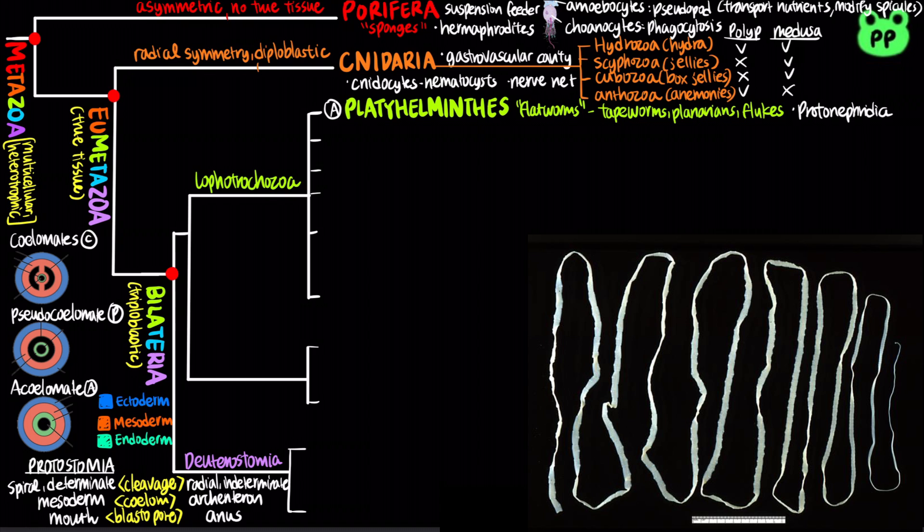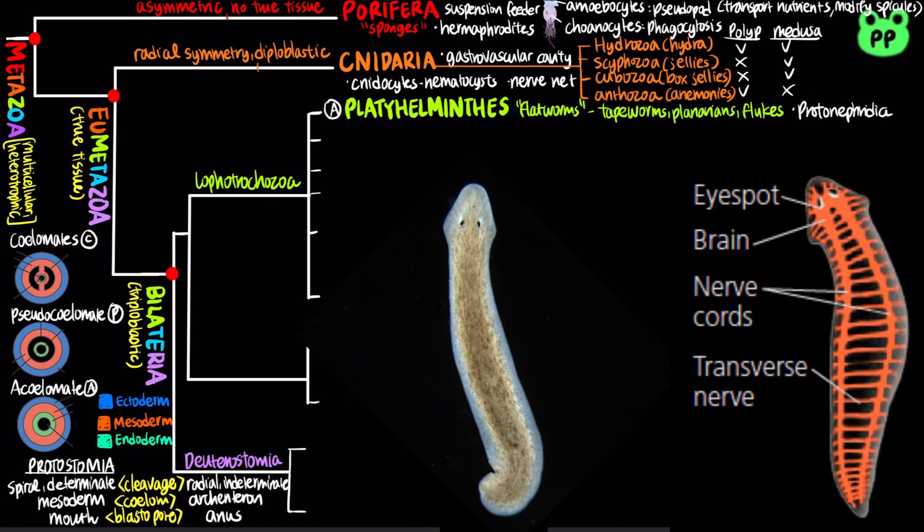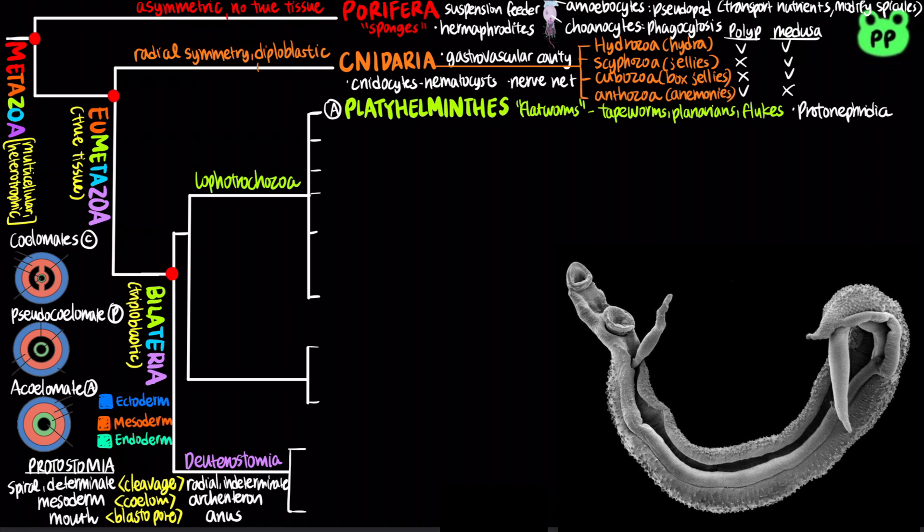Tapeworm fertilized eggs leave the host body in feces. Planarians have light-sensitive eyespots and a centralized nerve net; they are the most well-studied flatworm. Many flukes are also parasites.